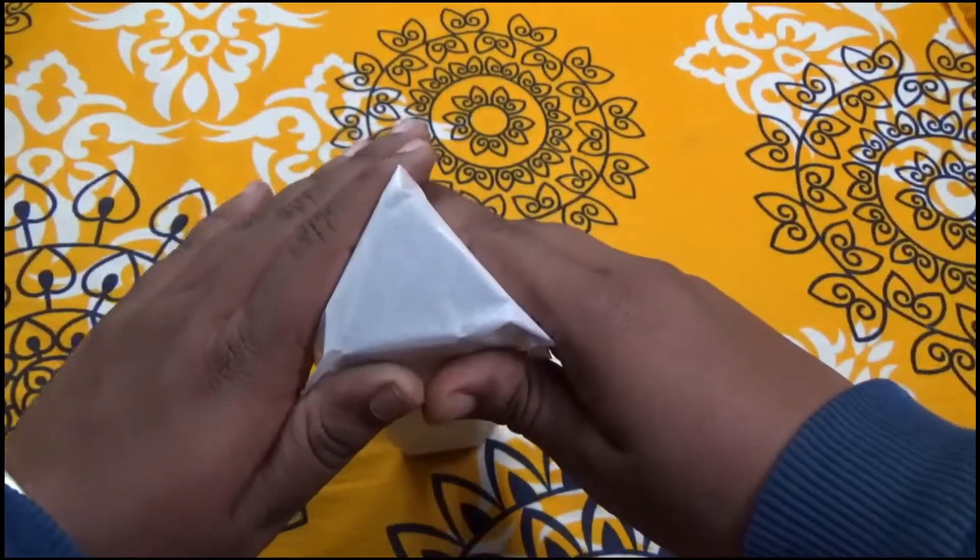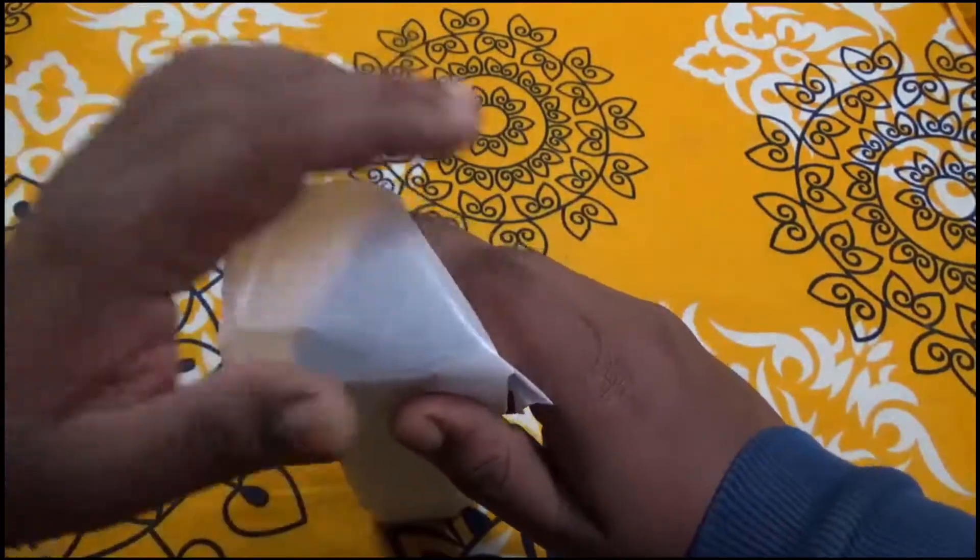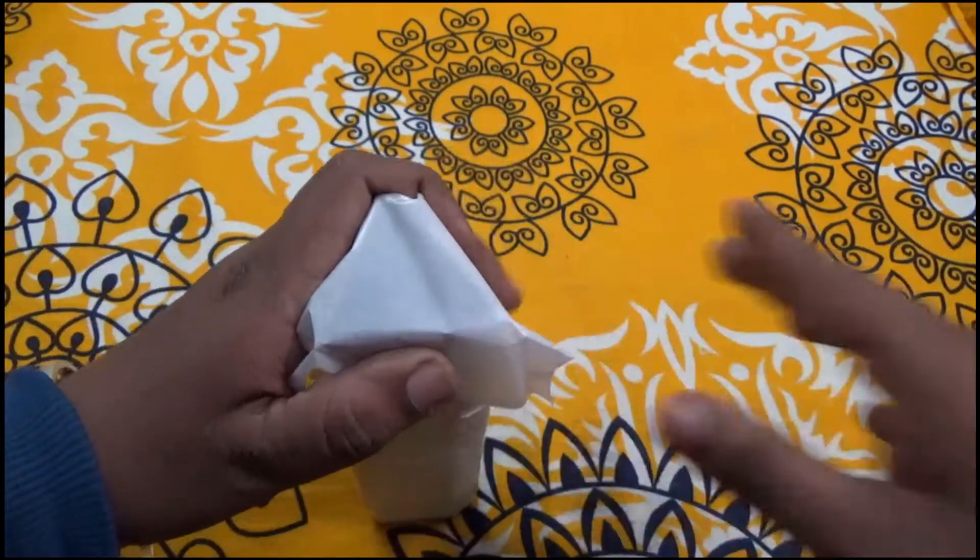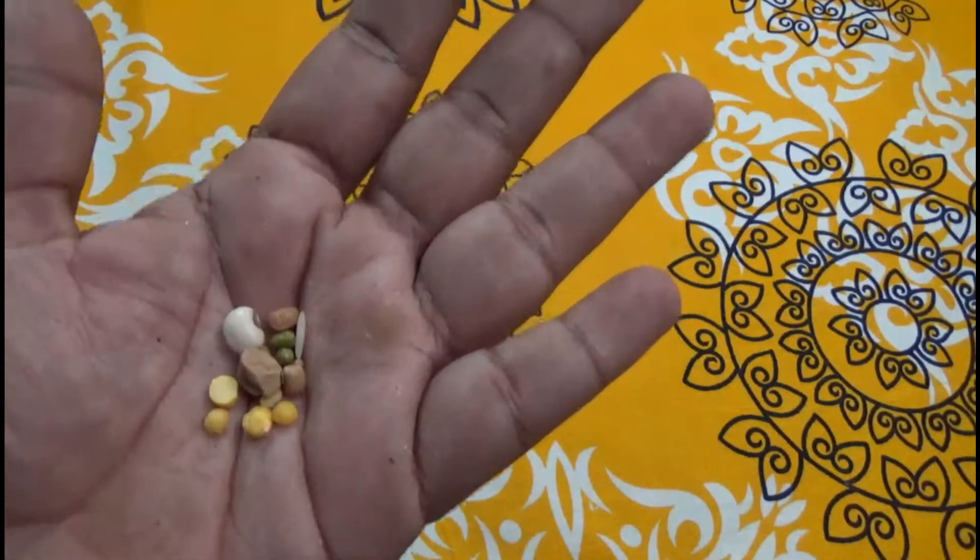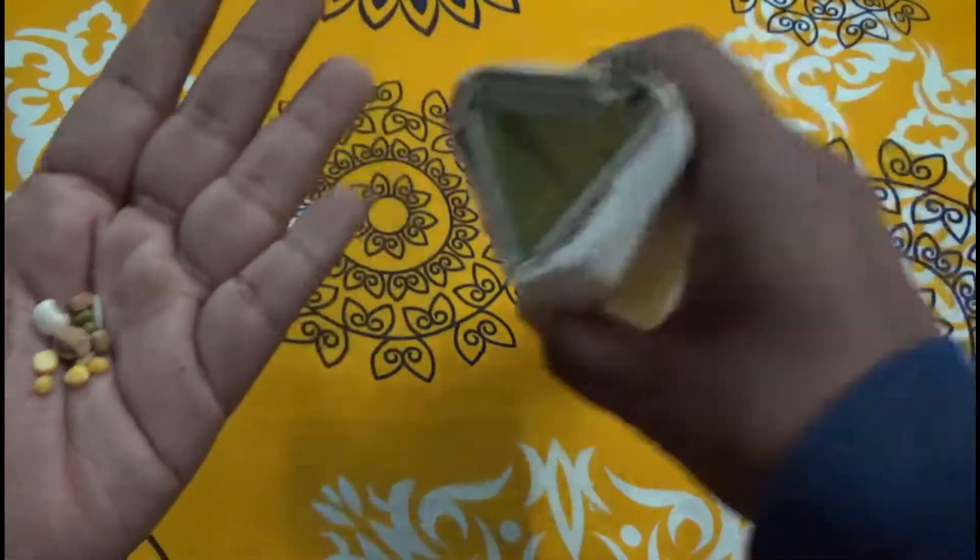I am using some grains of pulses to add in our kaleidoscope and let's see how they look in our instrument.